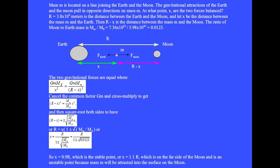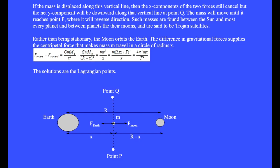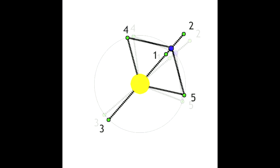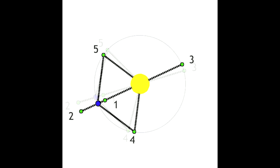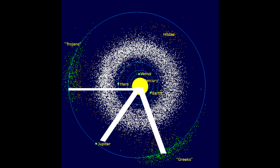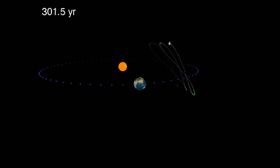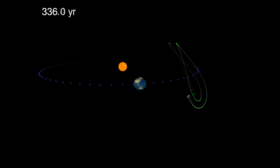The two gravitational forces are equal at both solutions for x. But at the stable solution the vector forces point in opposite directions and cancel, while at the unstable point the two vector forces point in the same direction. A space hotel could sit in balance at x equals 0.9R. If the hotel is displaced along this line, the x-component of the two forces still cancel but the net y-component will be downward, and the hotel will move until it reaches point P where it reverses direction in a repeating cycle. Such masses are called Trojan satellites, and here is Paul Weigert's animation of the Earth's Trojan satellite, which was just recently discovered.